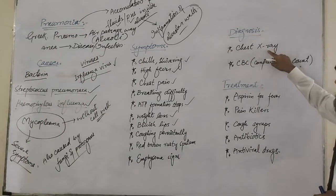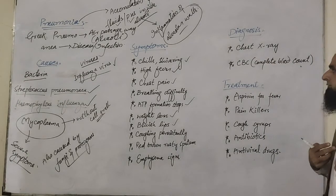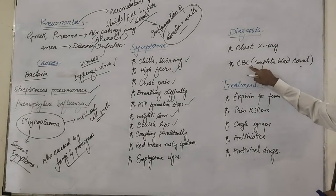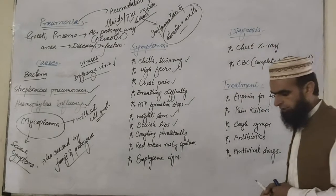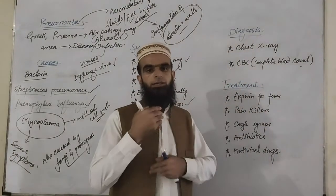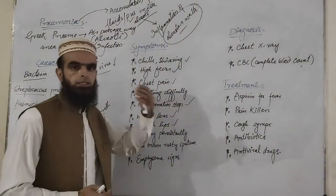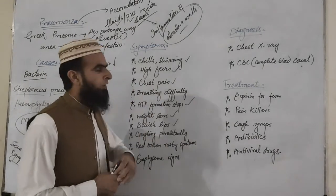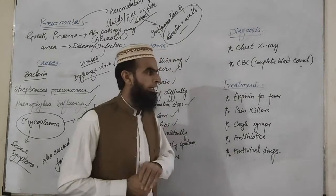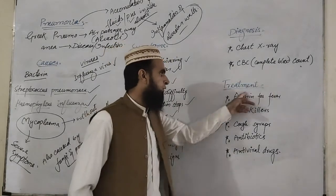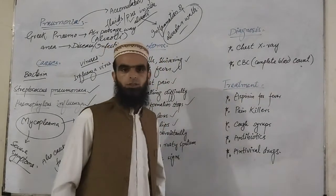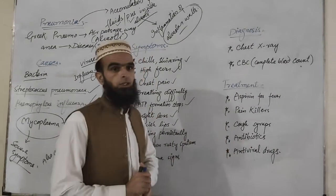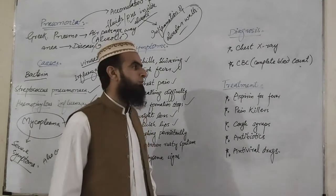They are: chest X-ray — we can take an X-ray of the chest of the patient — and CBC, meaning complete blood count. With the help of these two diagnosis methods, we can diagnose the disease and thereby recognize and identify the pneumonia disease. Once pneumonia is identified and recognized, we have to go towards treatment because it is very important; otherwise, it will become very dangerous and sometimes fatal.